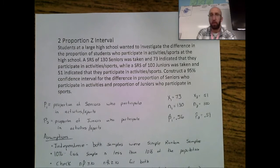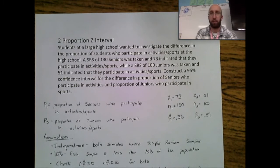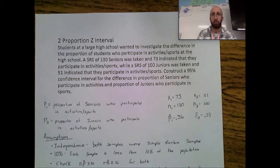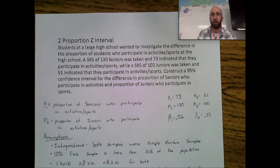Students at a large high school wanted to investigate the difference in the proportion of students who participate in activities and sports. A simple random sample of 130 seniors was taken and 73 indicated they participate in activities and sports, while a simple random sample of 100 juniors was taken and 51 indicated they participate. Construct a 95% confidence interval for the difference in proportion of seniors versus juniors who participate.